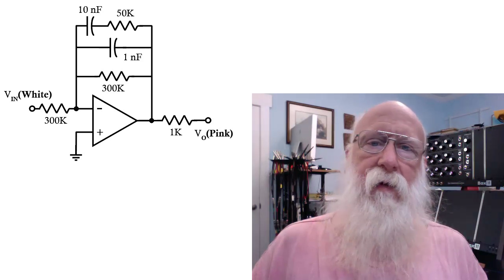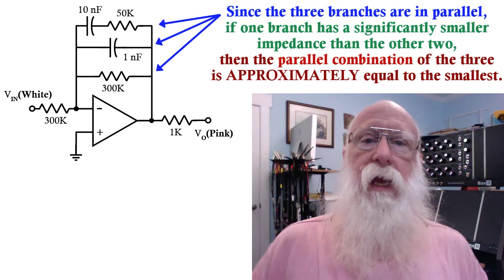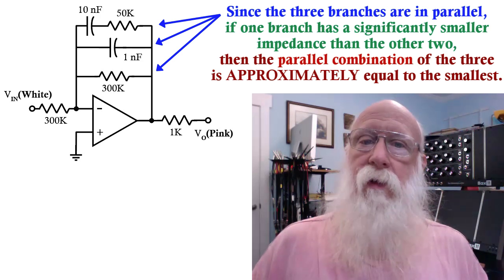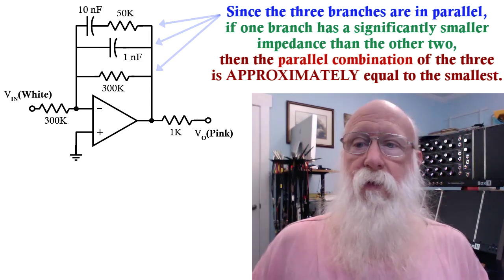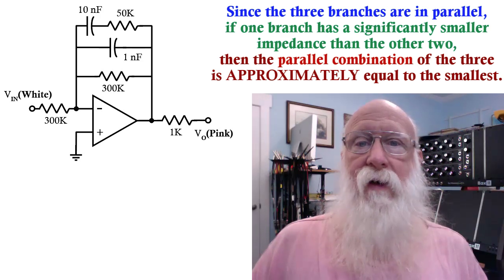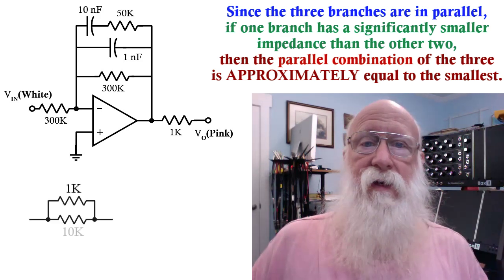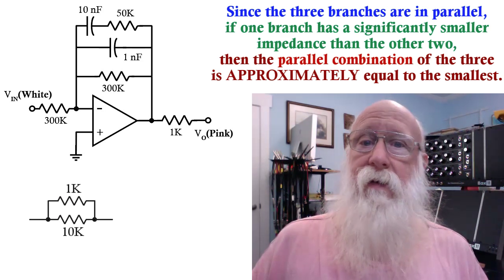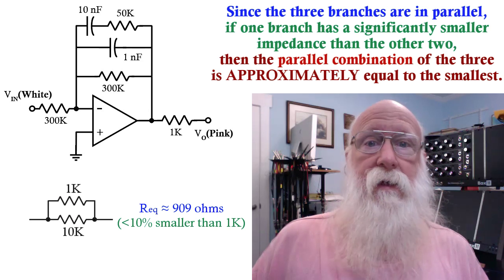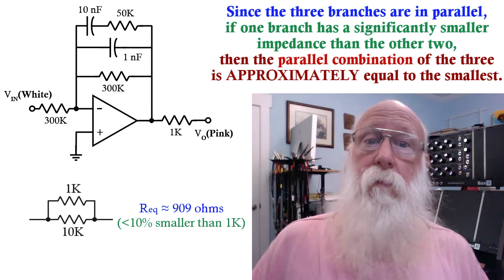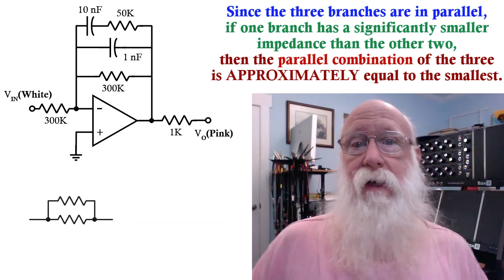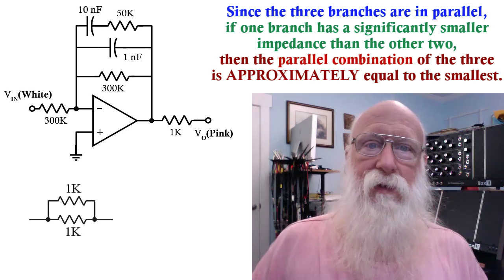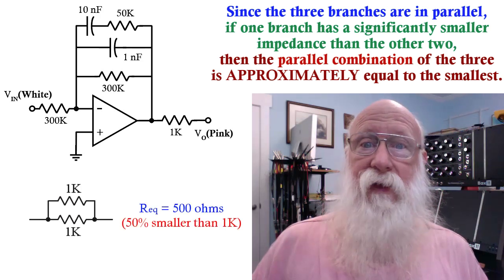The basic idea here is that if one of those branches has a lower impedance than the other two, it's the one controlling the overall impedance of the network. For example, if you have a 1K in parallel with a 10K, the 10K is a lot bigger than the 1K, and so the parallel combination is pretty close to 1K. It's about 900 ohms, or 0.9K. On the other hand, if you had two 1Ks in parallel, then that's going to make a fairly large difference. Because then instead of 1K, you've got 500, half of that impedance.